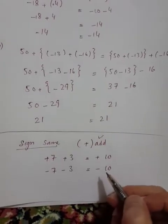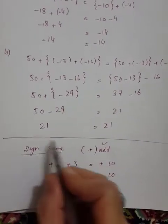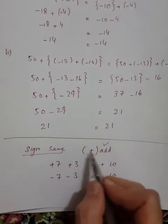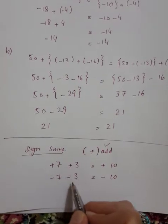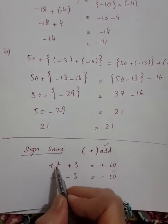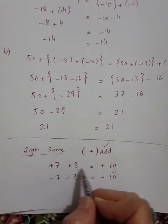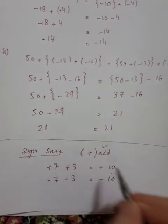If signs are different, if one is plus and one is minus, you subtract the numbers and take the sign of the larger. Like seven plus three: minus sign, plus sign, different signs. You add them and the sign remains. Seven plus three equals ten.